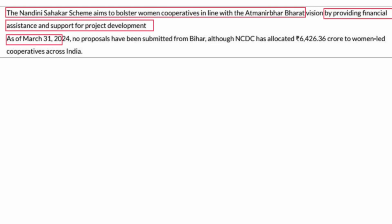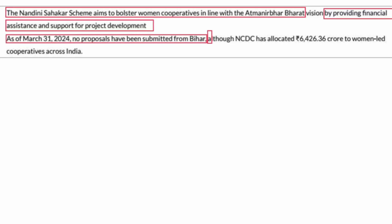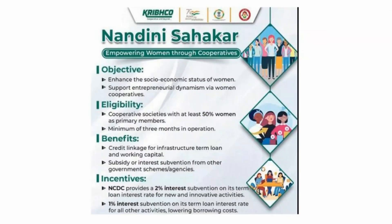As of March 31st, 2024, no proposals have been submitted from Bihar, although the NCDC has allocated 6,426.36 crores to women-led cooperatives across India under this Nandini Sahkar scheme.